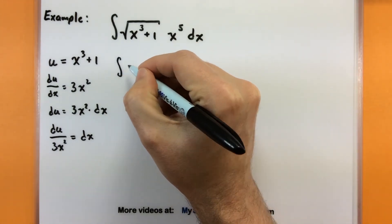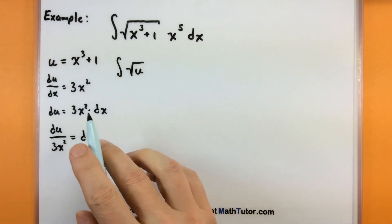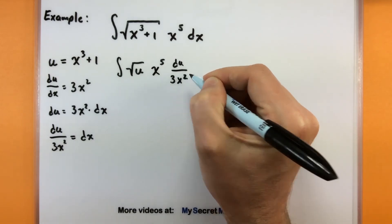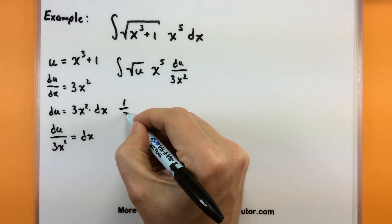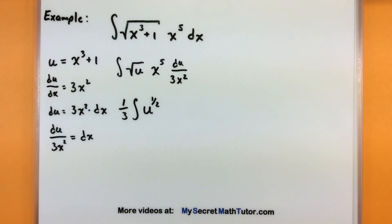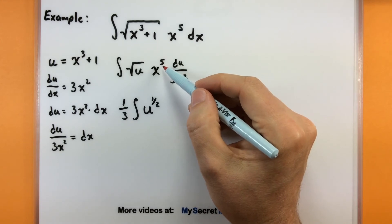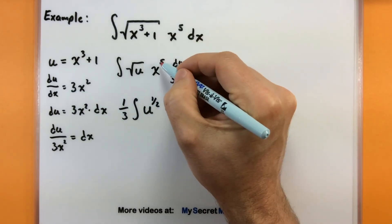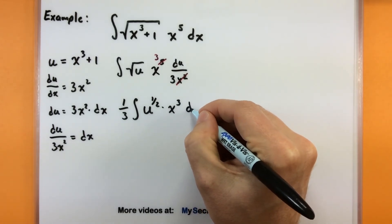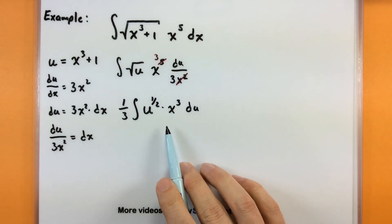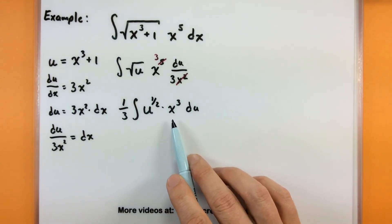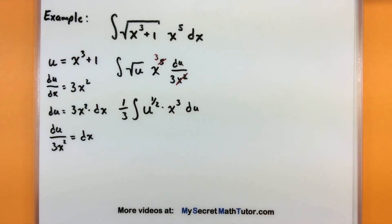Putting in the pieces: I have the integral of u to the one-half — that's fine — then x to the fifth, and on the end du all divided by 3x squared. The one-third is a constant and moves out front. The x's: I have x to the fifth and x squared, so a couple cancel but I'm still left with x cubed. They're not completely gone. As I mentioned, you can't take the antiderivative until everything is in terms of u.